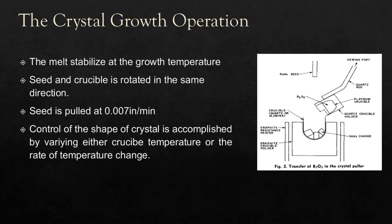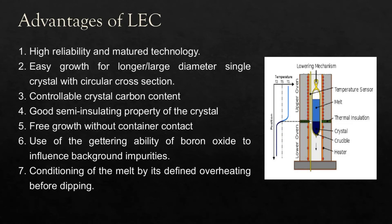Control of crystal shape is accomplished by varying crucible temperature or the rate of temperature change. Here are some advantages of LEC: high reliability and mature technology; easy growth of longer or large-diameter single crystals with circular cross-section; controllable crystal carbon content; good semi-insulating properties; growth without container contact; and the ability of boron oxide to influence background impurities. Conditioning of the melt is defined as overheating before dipping.